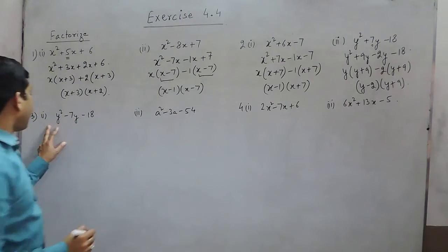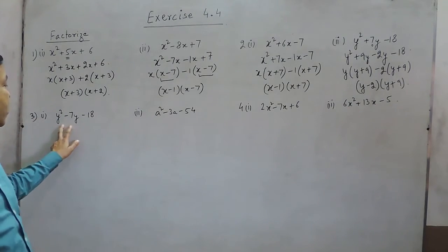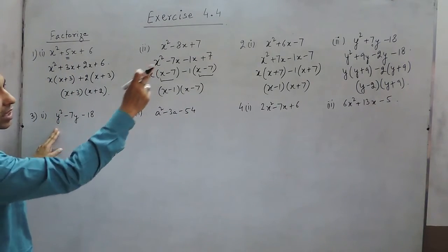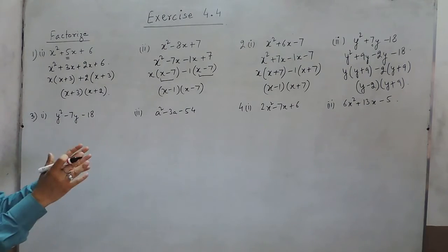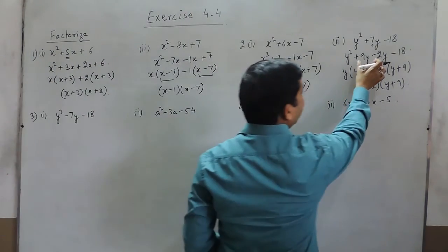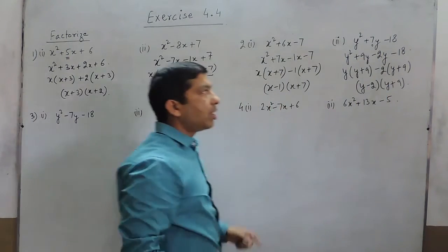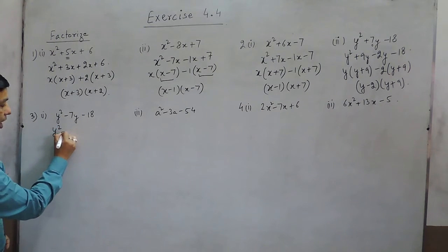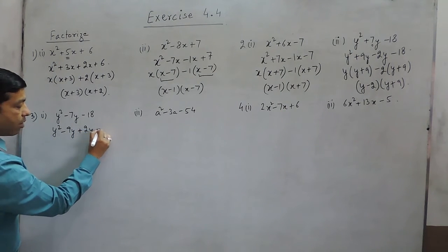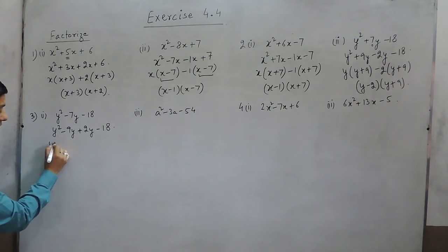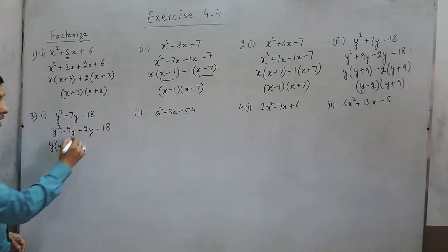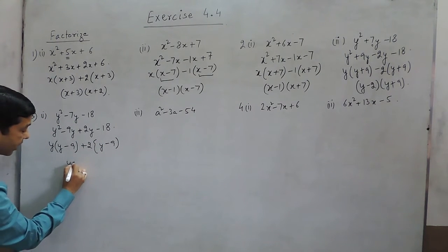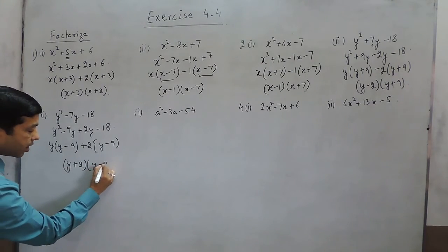In question number 3, first part, this looks similar to question 2 part 2, but the only difference is the sign with 7 is now negative. So we change the numbers to minus 9 and plus 2: the multiplication remains minus 18, but the sum becomes minus 7. We write y squared minus 9y plus 2y minus 18. Taking y common gives y minus 9, and taking plus 2 common also gives y minus 9. So the two factors are y plus 2 and y minus 9.